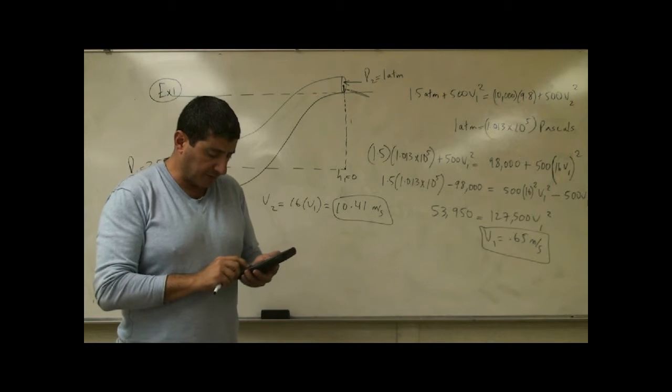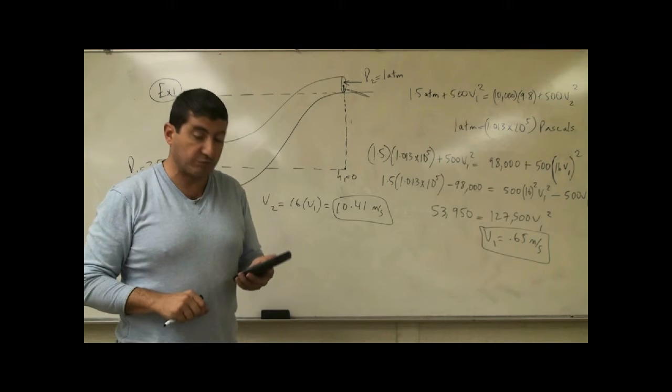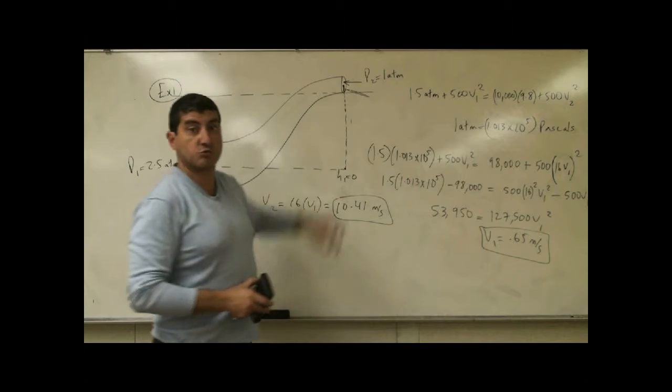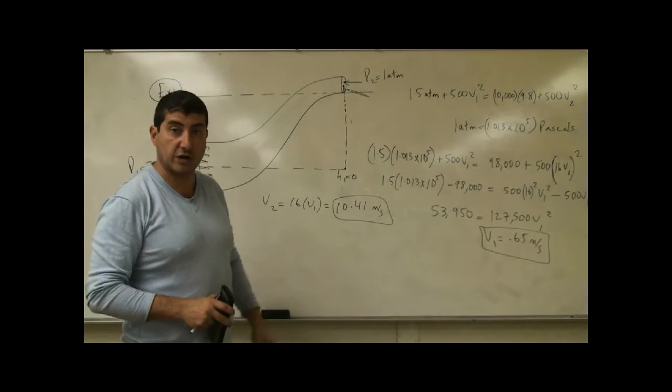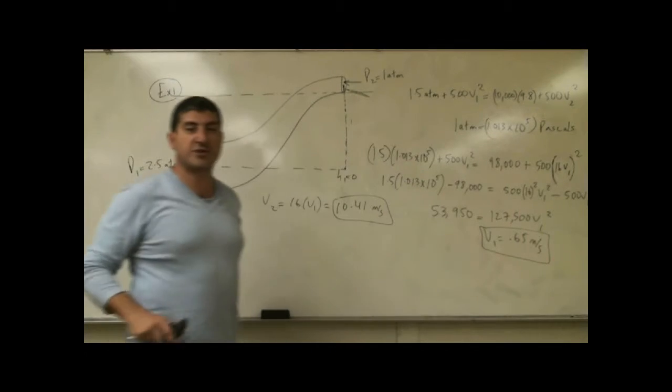If you multiply that by 3600 and divide by 1600 to convert to miles per hour, that's 23 miles per hour. So the water over here comes out really, really fast, 23 miles per hour. You could really feel that. If you're standing in the way, that water is going to take you.